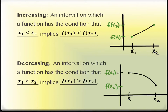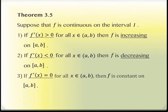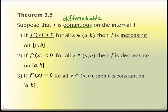This leads us to Theorem 3.5, which connects us back to those critical points. Theorem 3.5 tells us: suppose that f is differentiable on the interval — it should say differentiable, not just continuous. Continuous isn't false, but it's not a strong enough condition. If we can't guarantee differentiability, we can't guarantee the next parts are true. Thank you for noticing that — it's just a typo on the slides.